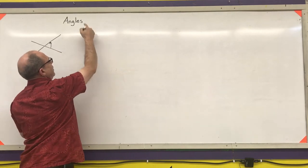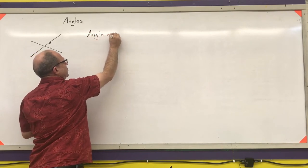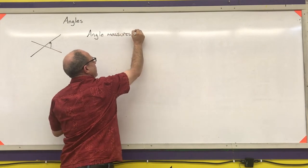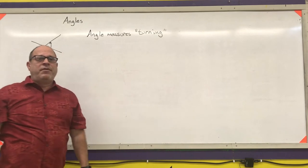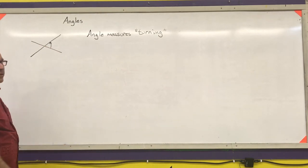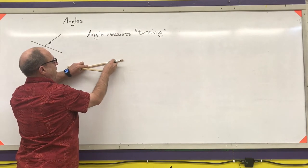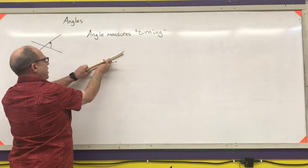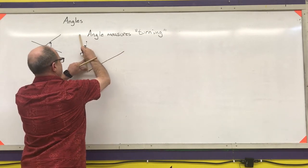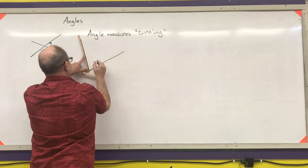The first thing is we want to know what an angle does — an angle measures turning, measures how far something turns. For our trigonometric definition of an angle, what we want to do is take a ray and then rotate that ray. So if I take this ray, I'll start here, and then if I rotate the ray, I get my angle.